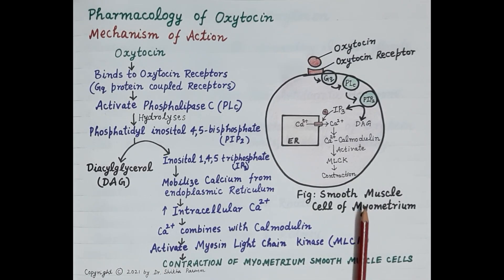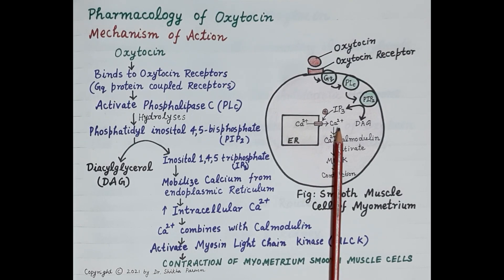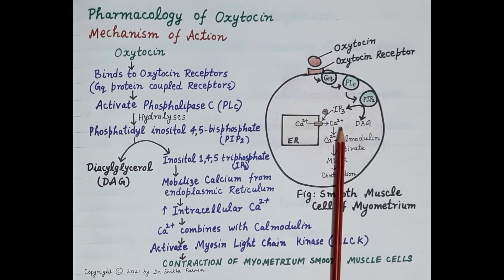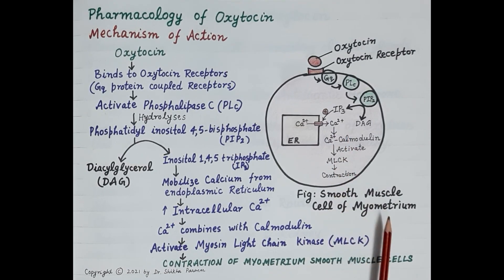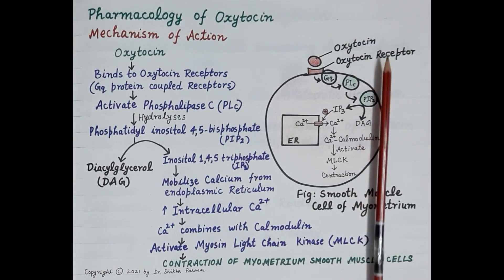Oxytocin increases intracellular calcium — specifically, it increases the concentration of calcium in the smooth muscle cells of the myometrium. This increase in calcium concentration is responsible for the contraction of these smooth muscle cells, thereby causing contraction of the myometrium and thus contraction of the uterus.